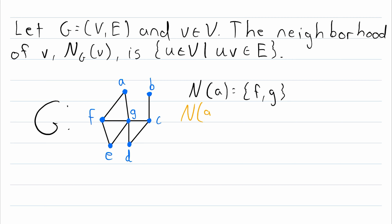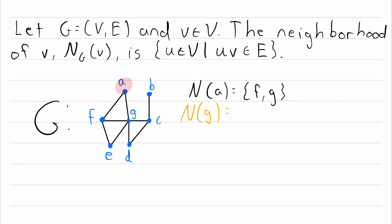For another example, what is the neighborhood of G? Remember that the neighborhood of a vertex is the set containing all vertices adjacent to that vertex — it's the set containing all neighbors. So the neighbors of G are A, F, E, D, and C, because all of these vertices are adjacent to G. So the neighborhood of G is the set containing A, F, E, D, and C.